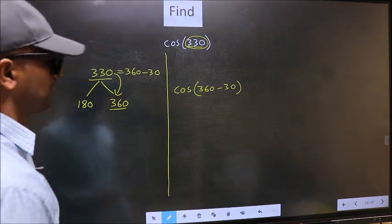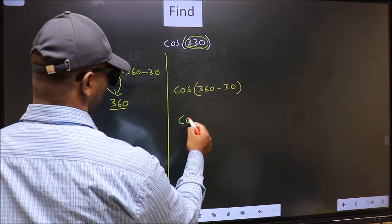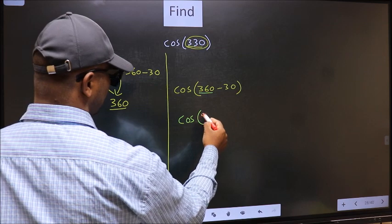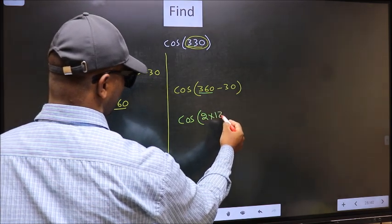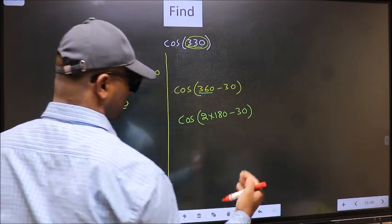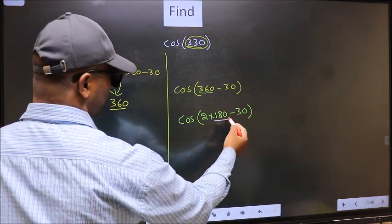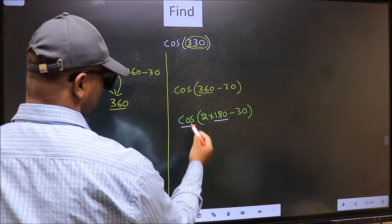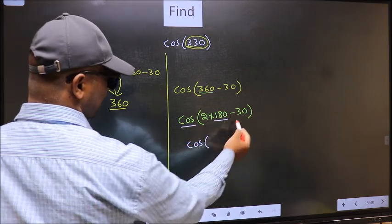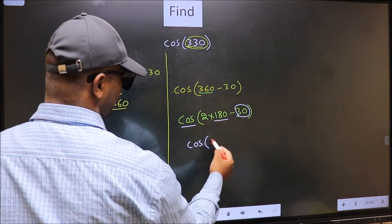Next, cos. Now in place of 360, we should write 2 times 180 minus 30. Next, here we have 180. So cos is not going to change. It will remain cos. And inside, we get this angle 30.